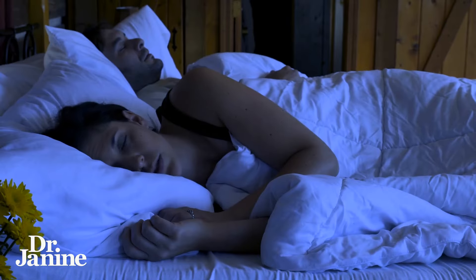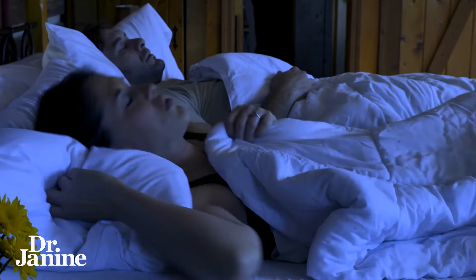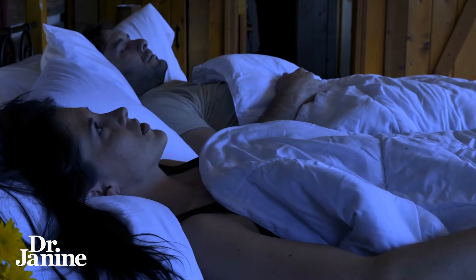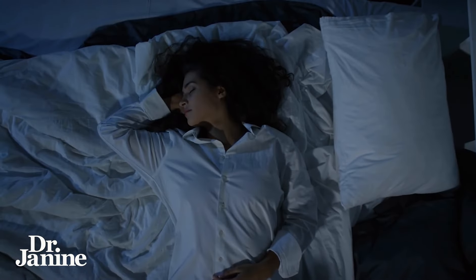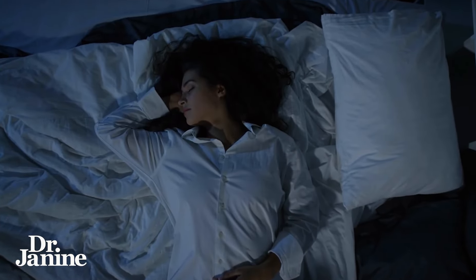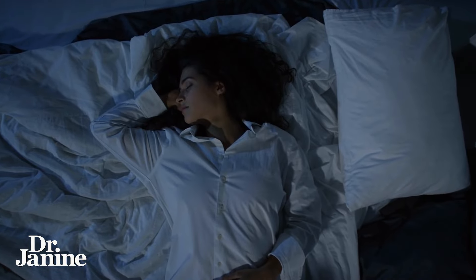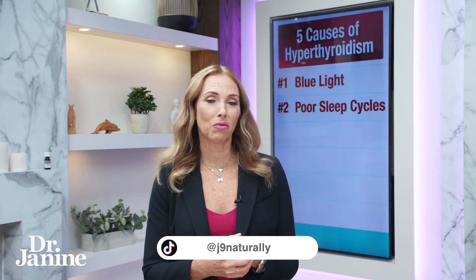Number two, another cause of that overactive thyroid is poor circadian biology — poor circadian rhythms, not having regular sleep schedules, and being all over the place in terms of the time that you wake up every morning and go to bed. It's really important to get good sleep hygiene, get into a good schedule, turn off blue light especially after the sun has set, and make sure you're not on your screens or devices blasting all of those frequencies at your thyroid gland and causing those mismatches in your circadian rhythms.